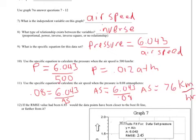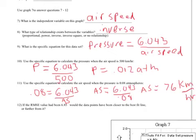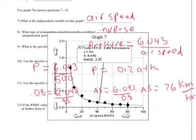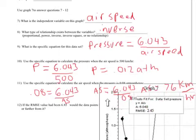It asks us: if the RMSE value had been 6.85, would the points have been closer to or farther from the line? The smaller the RMSE number, the closer the points are to the line; the larger the number, the farther they are. Comparing 6.85 to the actual RMSE value on this graph, which is 2.54 — since 2.54 is closer to 0, that means 6.85 is larger, so the points would be farther from the line.